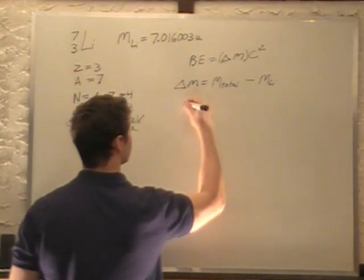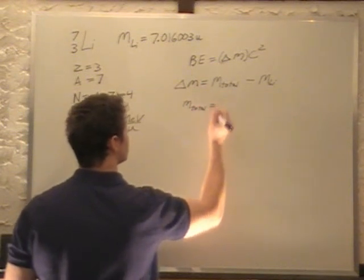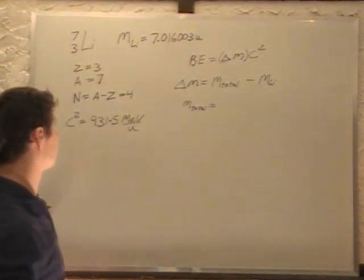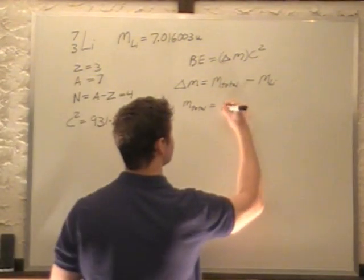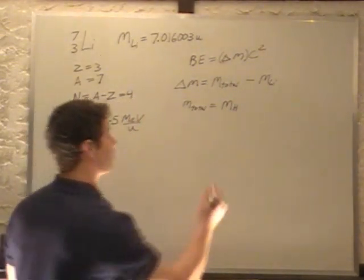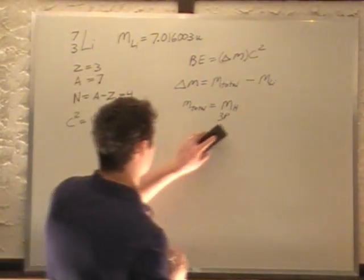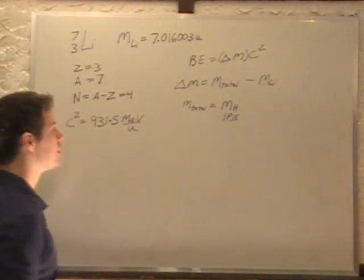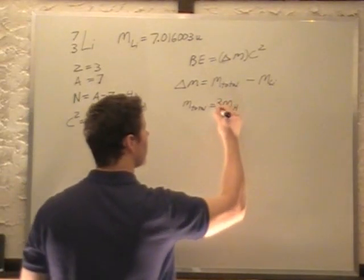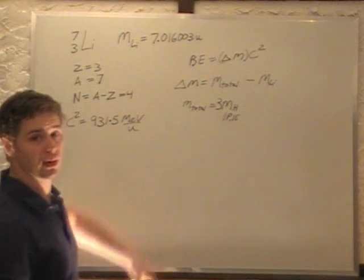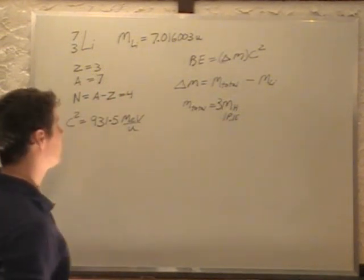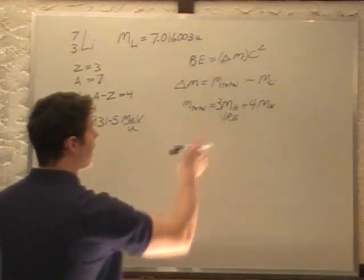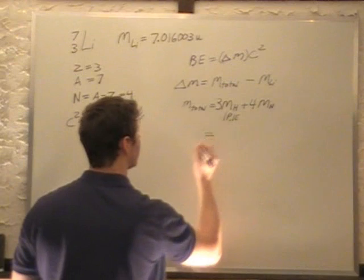Okay, so our total mass is going to be equal to, now, like I said, we got three protons, four neutrons, and some electrons and stuff. But, we can model it as the mass of hydrogen. Because the mass of hydrogen has one proton, one electron. Okay? So, that's our hydrogen. So, if we have three of these, that accounts for three of our protons and three of our electrons. Okay? So, all we have left is our neutrons. We have four of those, plus four times the mass of a neutron. And the reason I say hydrogen is that's a generally known thing. You can find that constant in your textbook.